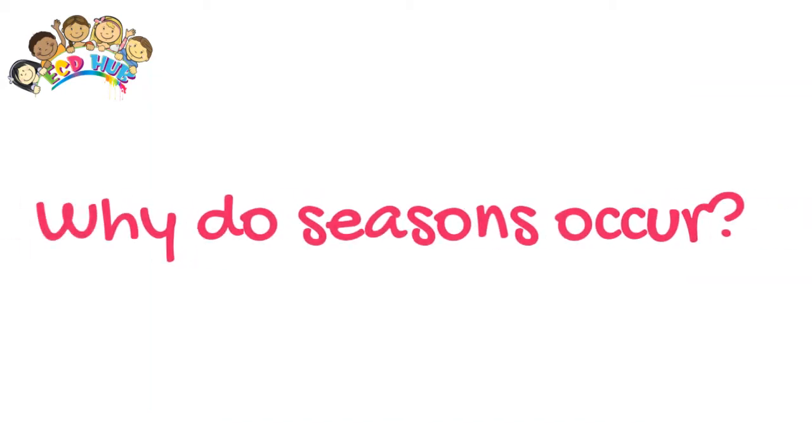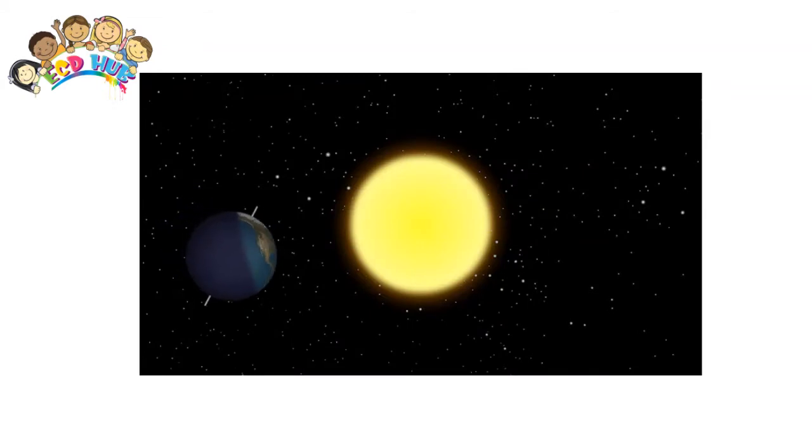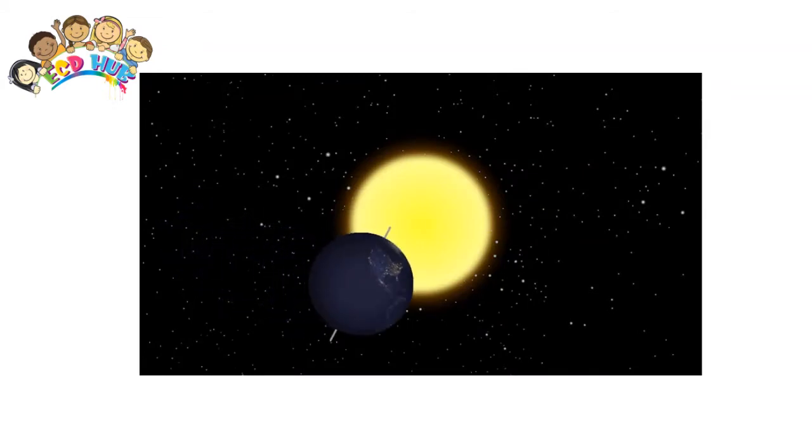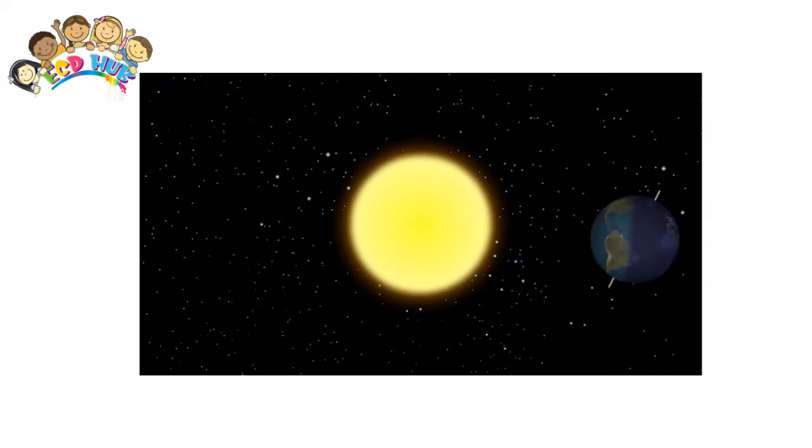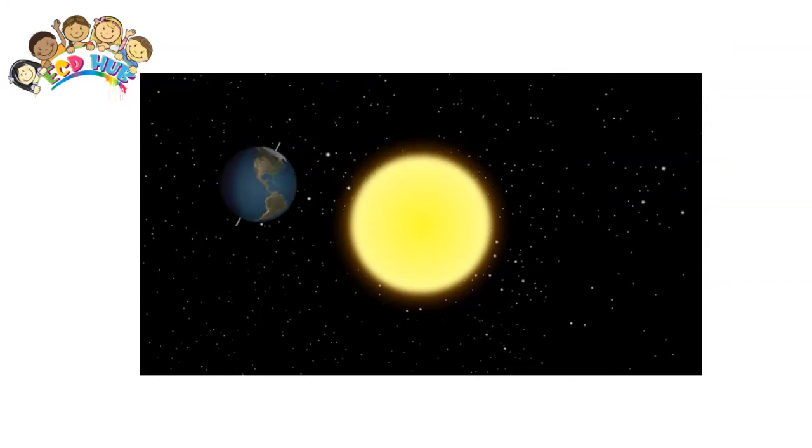Why do seasons occur? Seasons are caused because of the Earth's changing relationship to the Sun. The Earth travels around the Sun, called an orbit, once a year or every 365 days.